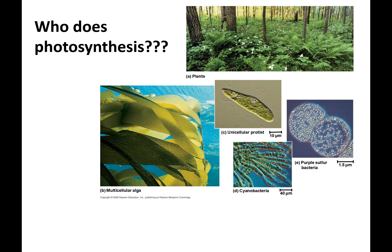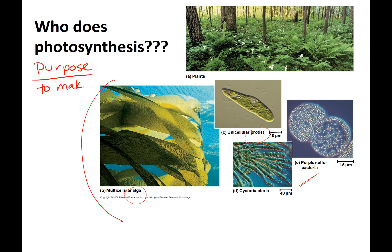First, let's talk about who does photosynthesis. We know that photosynthesis is done by plants. About half — maybe over half — of photosynthesis is actually done in the water. There are algae, which are actually protists. Here's a unicellular protist, which is my favorite: euglena. There are also photosynthetic bacteria and phytoplankton. The purpose of photosynthesis is to make sugars or organic molecules.